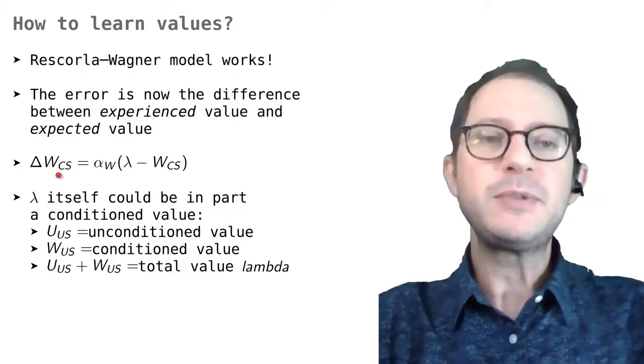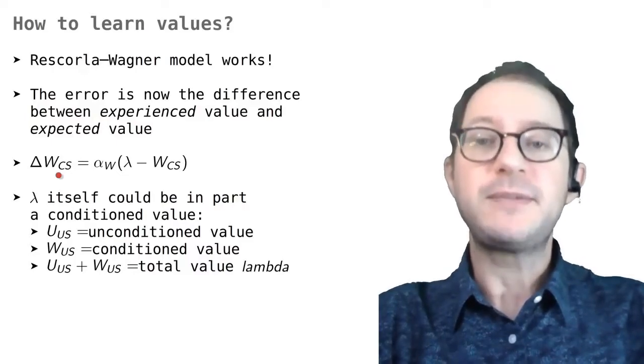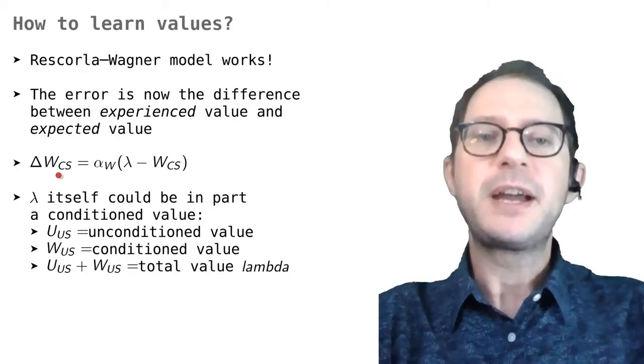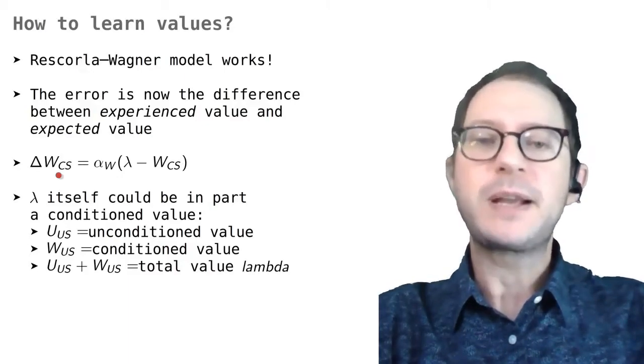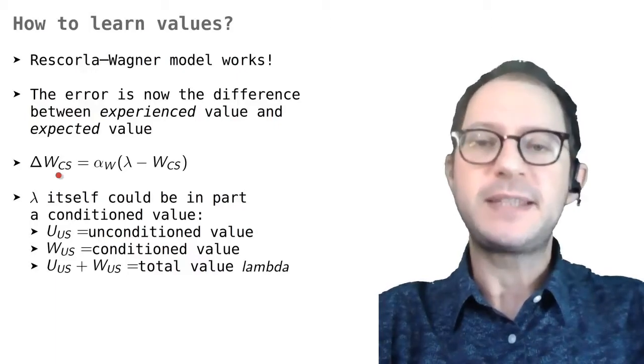However, the animal will soon start to notice that the CS is followed by the US, which is a valuable stimulus. We can then say that there is an error, our usual error from the Rescorla-Wagner model, which is the difference in value between the US and the CS.